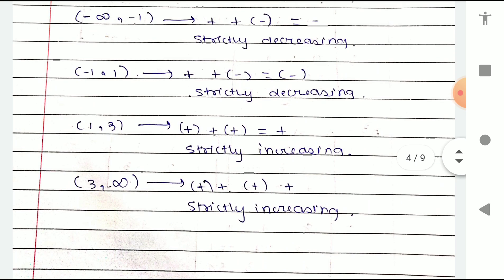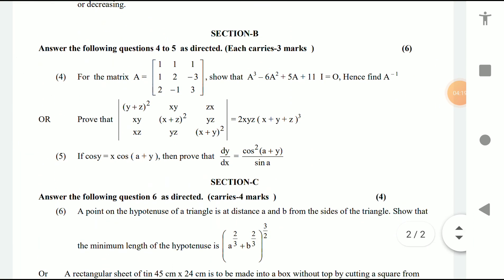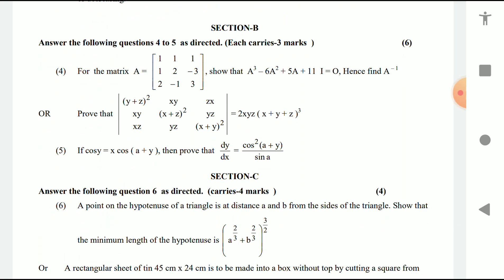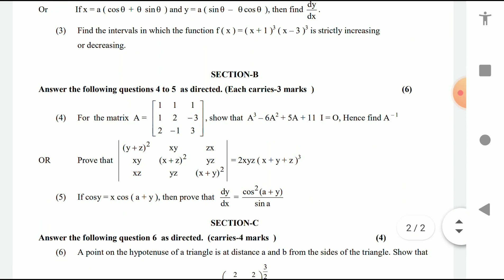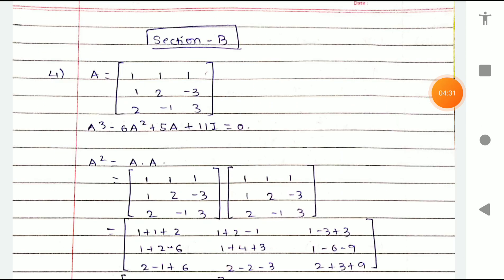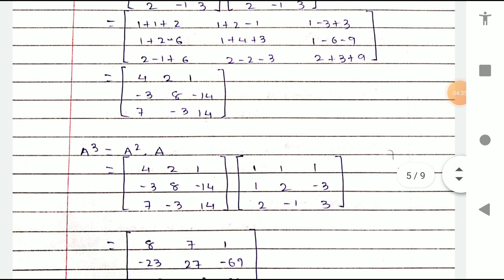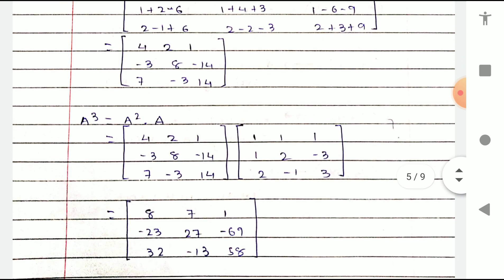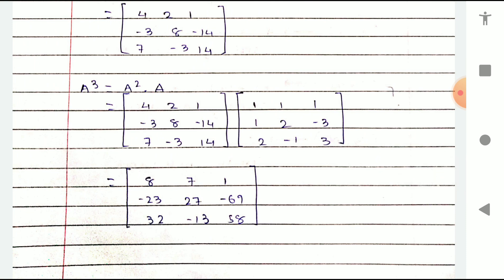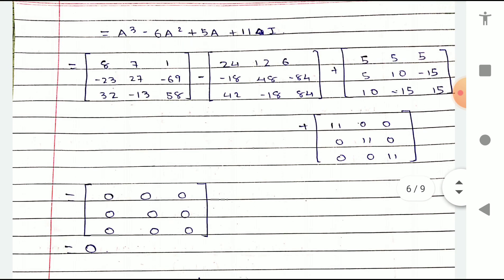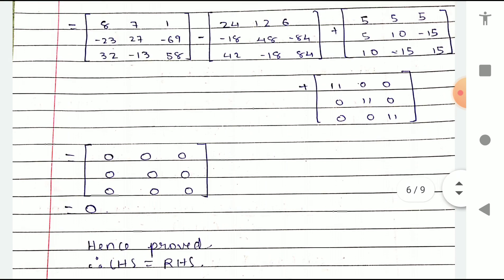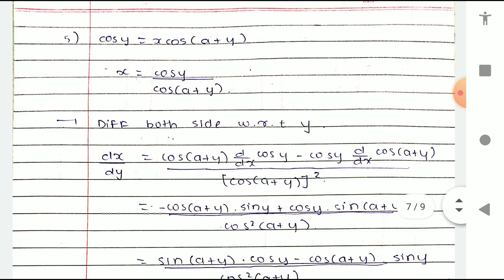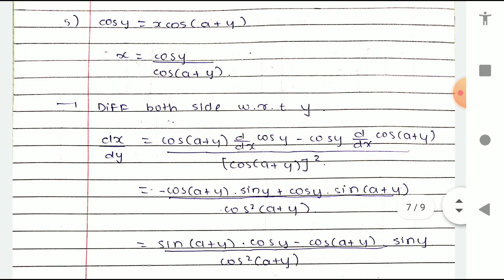Now we have reached Section B — answer the following questions 4 to 5 as directed; each carries three marks. The solution is shown on screen — you can write it down. For Question 4, the proof is given: LHS is equal to RHS. For Question 5, differentiate both sides and everything is shown before you.